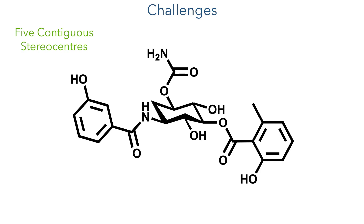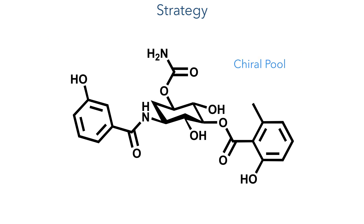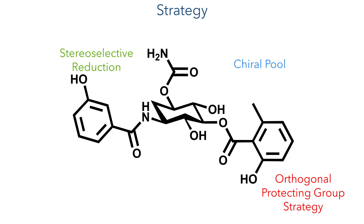The challenges associated with this molecule result from a highly functionalised cyclohexane core, which bears five contiguous stereocenters, four of which are bonded to oxygen groups. Two of these oxygen groups are functionalised — one as a carbamate and the other as an ester — meaning the route must be able to selectively manipulate and functionalise these oxygen groups individually. To synthesise this molecule, the researchers would draw on the chiral pool, using a starting material that already had many of the desired chiral centres, which could be further manipulated using a stereoselective reduction, and an orthogonal protecting group strategy would allow selective manipulation of the hydroxyl groups.